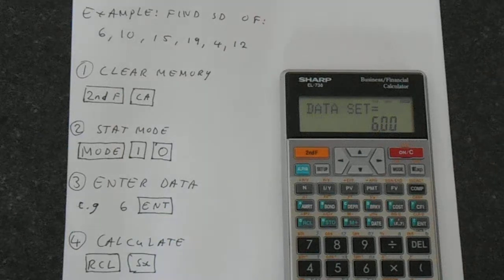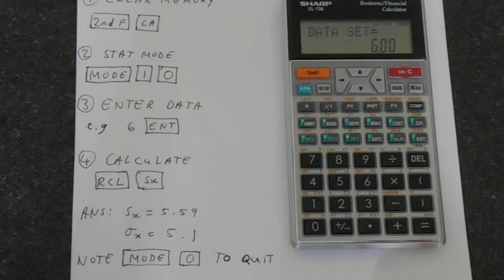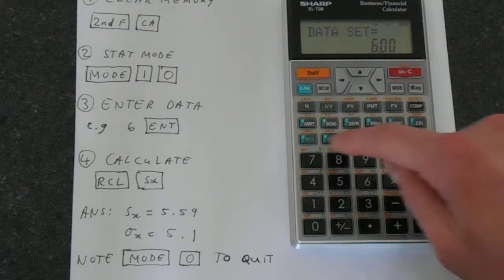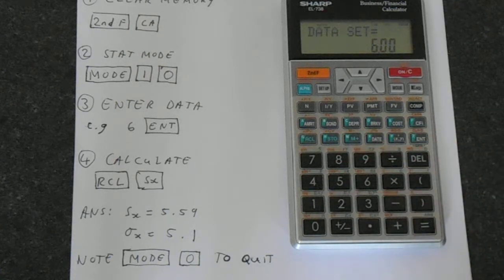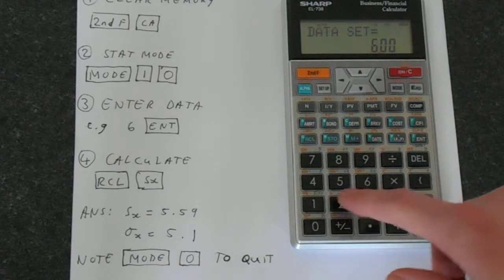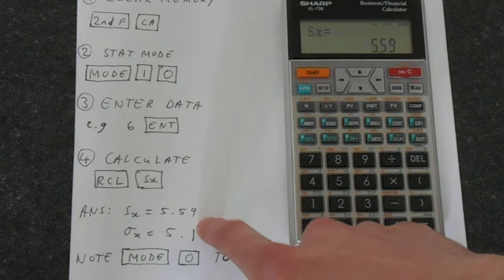So that's the data set in the memory. And then you use the recall button. And we should get these answers if we've done it all right. So we want recall. And then you'll notice in green you've got all the statistical functions. So on the number 5 we have the Sx. And that gives us that answer there.